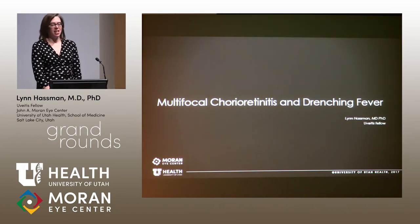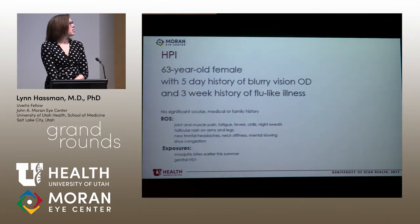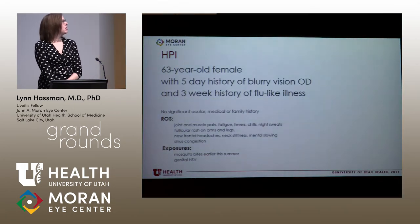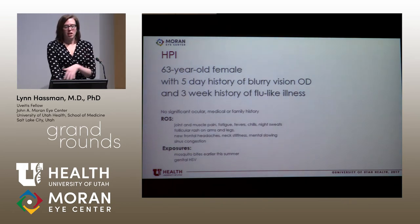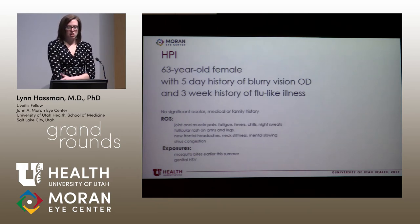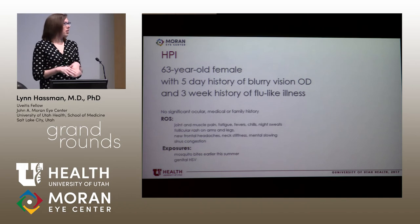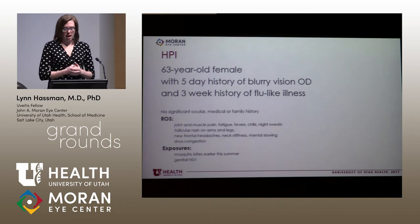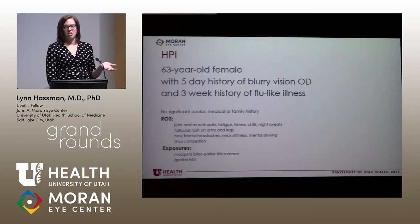I'm Lynn Hassman, the uveitis fellow. This is a case of multifocal chorioretinitis and drenching fever. A 63-year-old female with a five-day history of blurry vision in her right eye, following a three-week history of a flu-like illness. No significant past medical, ocular, or family history, but on review of systems she had joint pain, muscle pain, fatigue, chills, night sweats, a follicular-type rash on her arms and legs, new frontal headaches, neck stiffness, mental slowing, and sinus congestion. She was obviously sick.